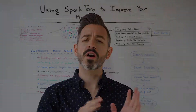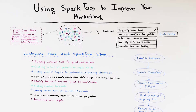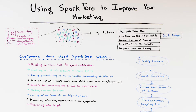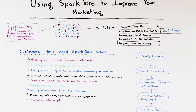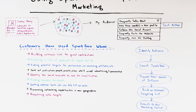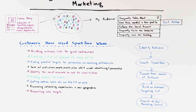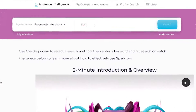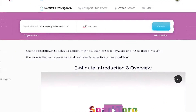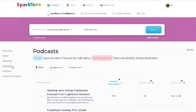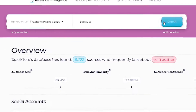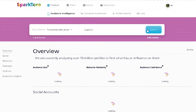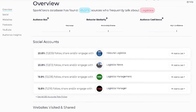First, let's talk about what SparkToro can do. SparkToro is an audience intelligence tool that gathers billions of web and social profiles, aggregates them, and gives you the power to search across them. That means you can, for example, quickly find out which podcasts are popular with science fiction writers, or discover niche websites popular with professionals in the logistics field.